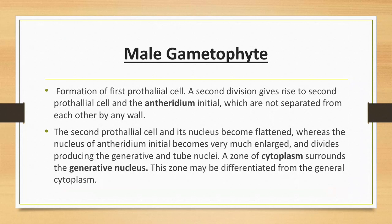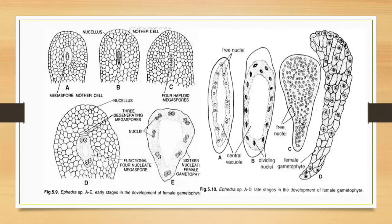Male gametophyte: Formation of the first prothallial cell — a second division gives rise to a second prothallial cell and the antheridial initial, which are not separated from each other by any wall. The second prothallial cell and its nucleus become flattened, whereas the nucleus of the antheridial initial becomes very much enlarged and divides, producing the generative and tube nuclei. A zone of cytoplasm surrounds the generative nucleus and this zone may be differentiated from the general cytoplasm. You can observe here four free nuclei, central vacuole, and dividing nuclei.